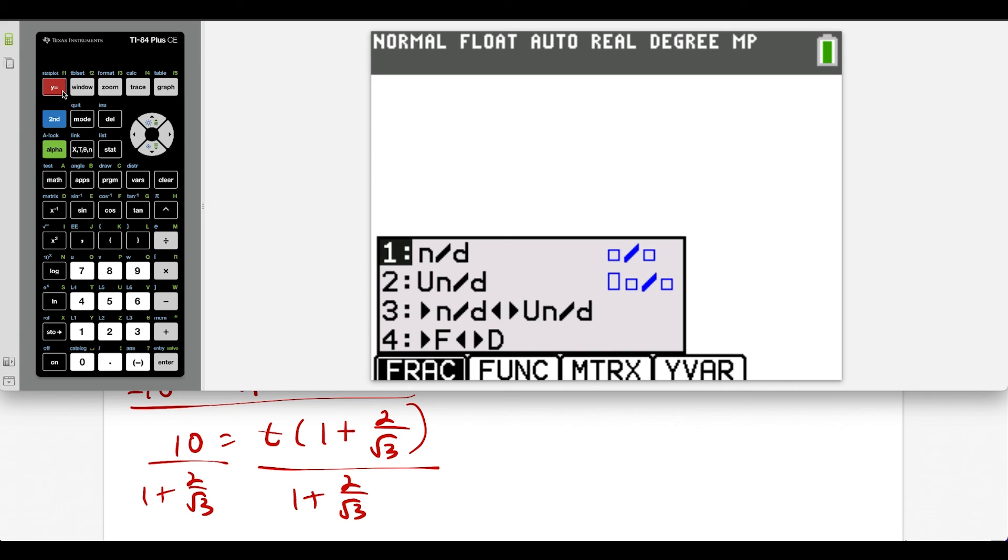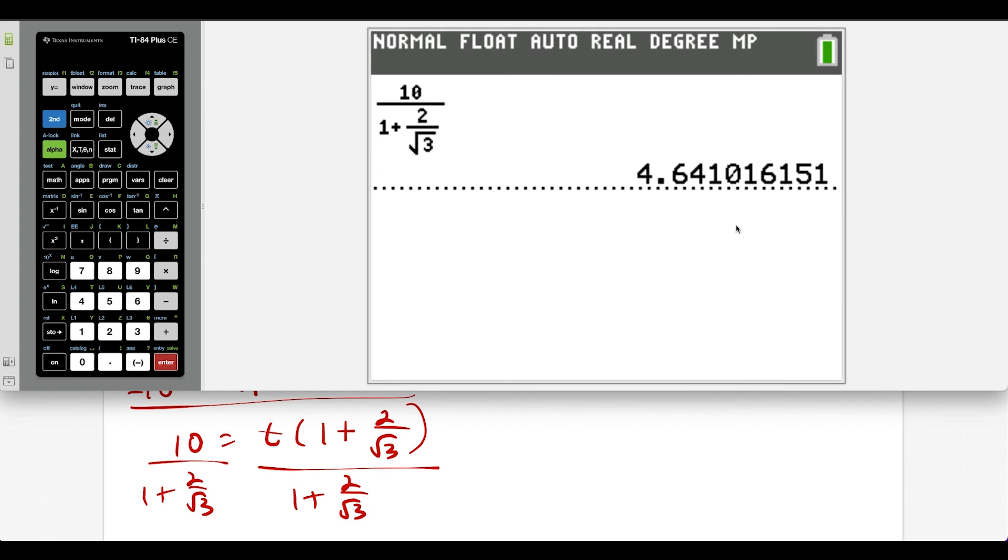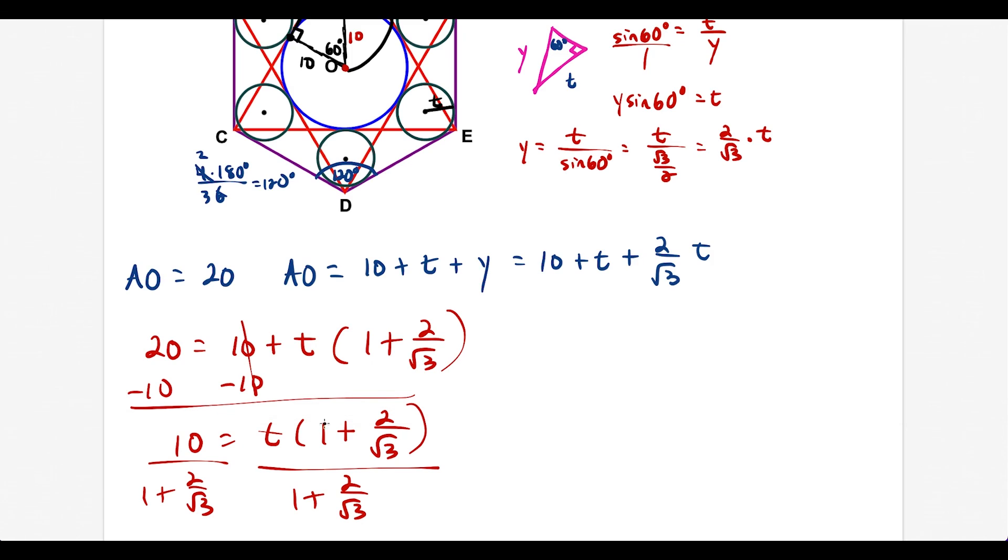So let's just type this in. We're going to have 10 divided by, in the denominator we have 1 plus another fraction, 2 divided by square root of 3. So now we just work this out. And this is going to be 4.641. So after everything cancels out, we're saying that t equals 4.641. That is the value of t.